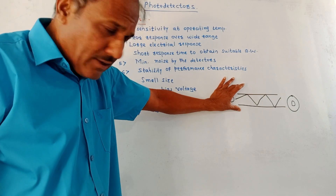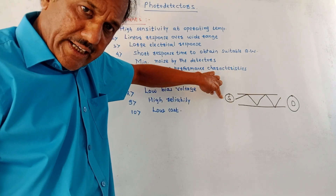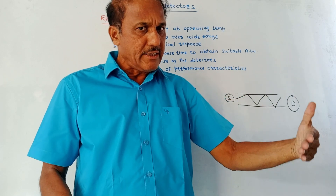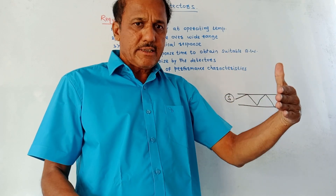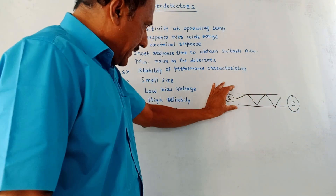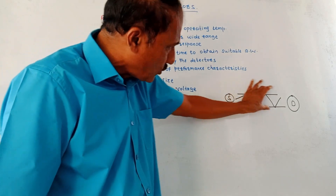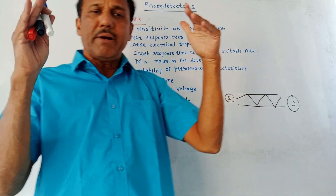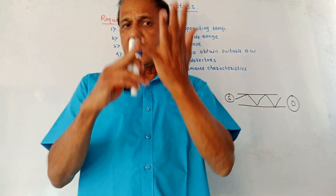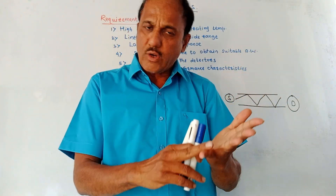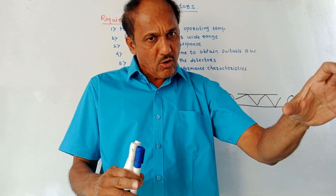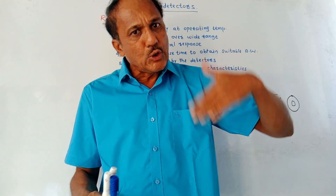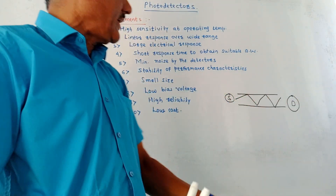This is the fiber optic cable. At one end, source is connected. The function of source, which we have already studied, is to convert electrical signal into light rays. Then these light rays travel through the fiber optic cable. At the output end, we have to connect a suitable detector — a device which is used to convert the incoming optical signal, that is incoming photons, back into electrical signal.